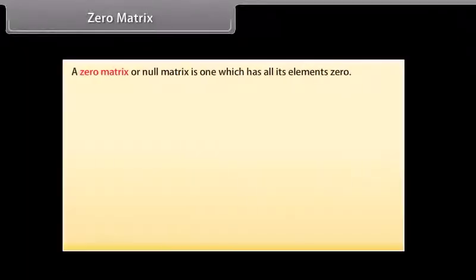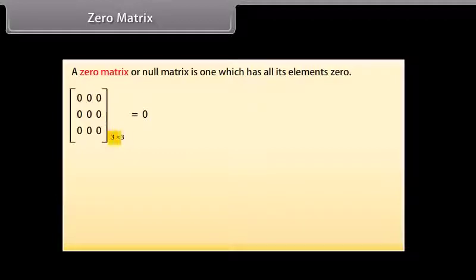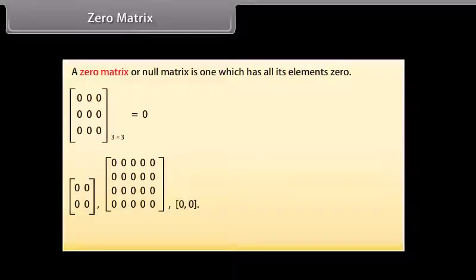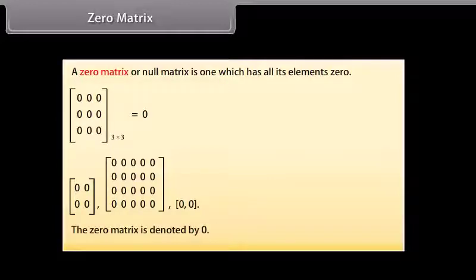Zero matrix. A zero matrix or null matrix is one which has all its elements equal to 0. Here is a 3 by 3 zero matrix, along with three more examples of zero matrices. The zero matrix is denoted by 0.